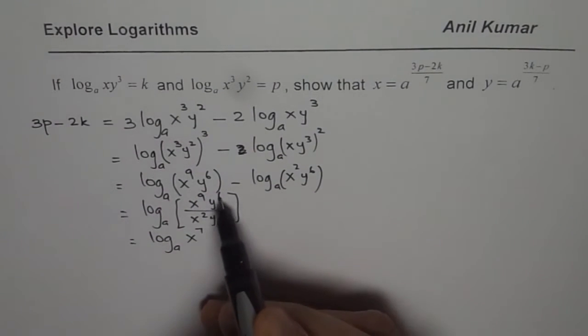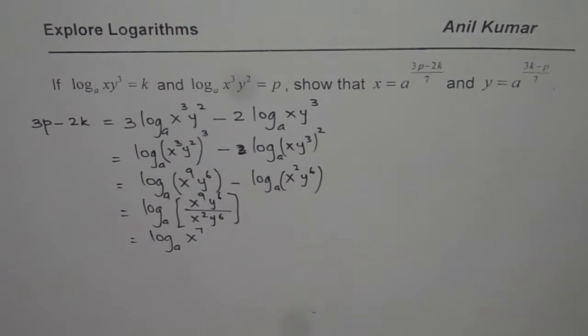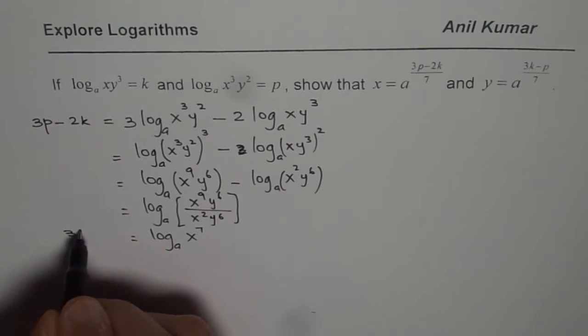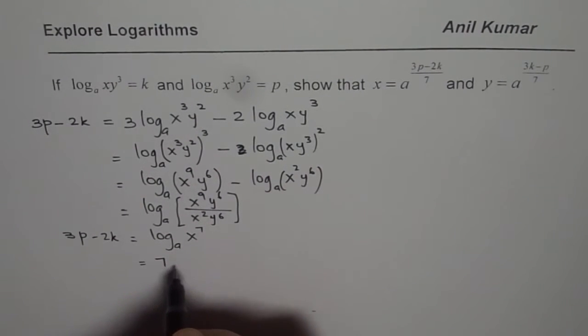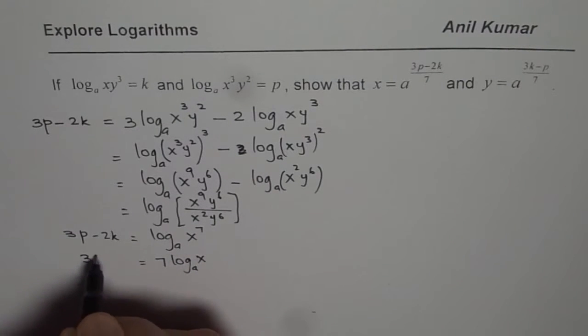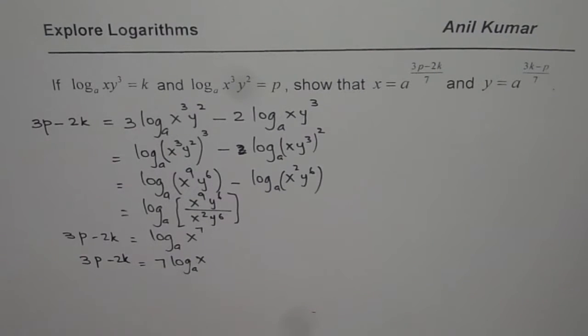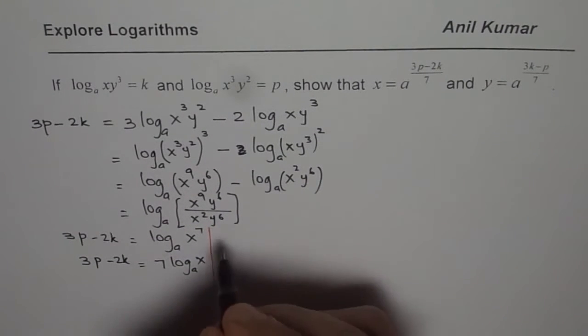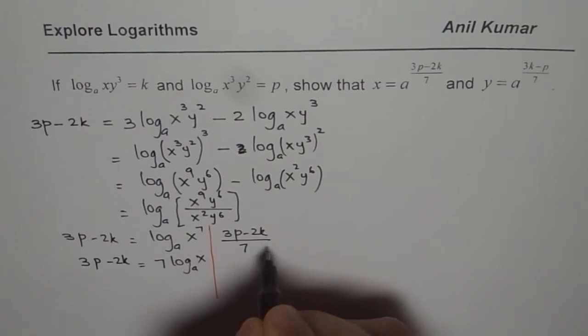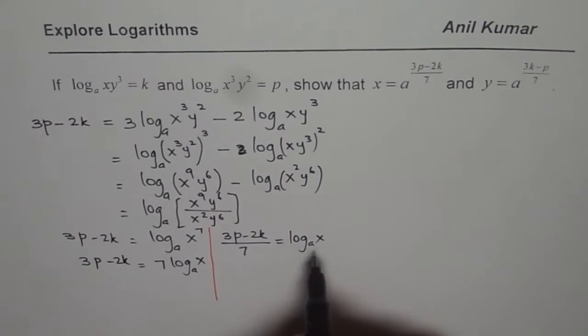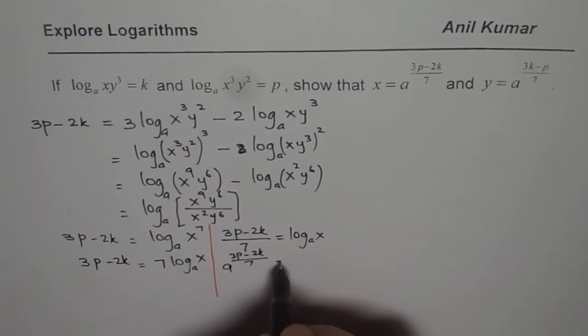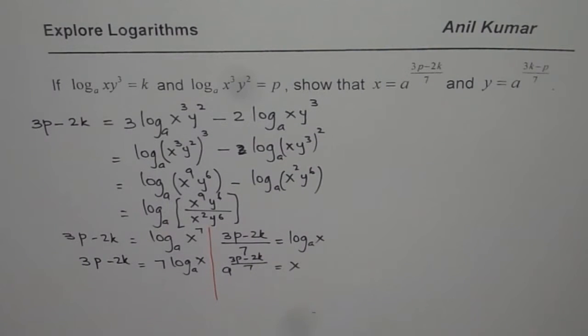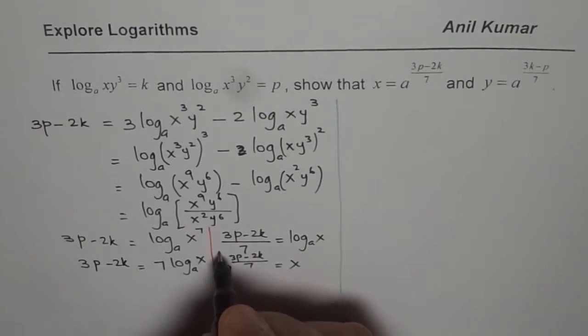Do you see that? y⁶ and y⁶ cancel, 9 minus 2 is 7. Now all this equals 3p - 2k. Let me write this here: 3p - 2k. So it means what? It means that I could use power rule now and I will write this as 7 times log_A of x equals 3p - 2k. Now I can divide by 7. So let me take it to the right side and show you the rest. So I can write this as (3p - 2k)/7 equals log_A of x.